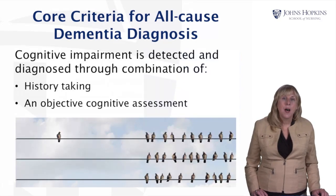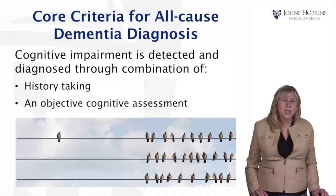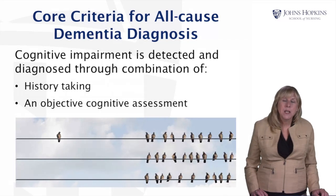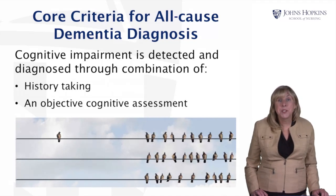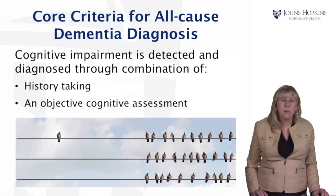Cognitive impairment is detected through a combination of history-taking. We talk with the individual experiencing the symptoms and a knowledgeable informant, usually a family caregiver, to get a good sense of this slow progressive decline in memory and in other functional symptoms. We also do an objective cognitive assessment — tests of different aspects of memory. This may be something like the Mini-Mental State Exam (MMSE), or the Montreal Cognitive Assessment (MOCA), and may also involve neuropsychological testing to get a deep dive into the aspects of memory being affected.